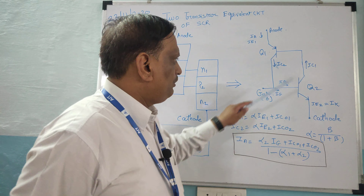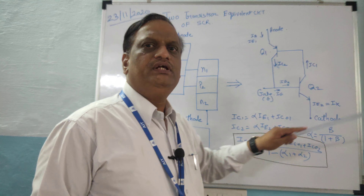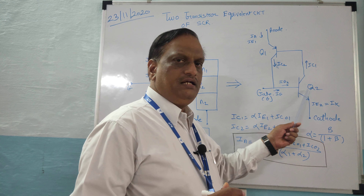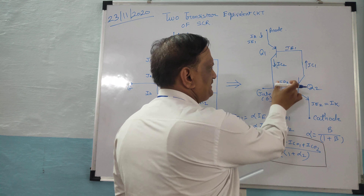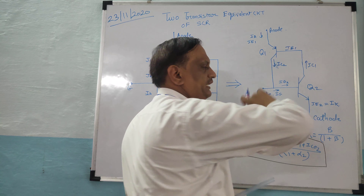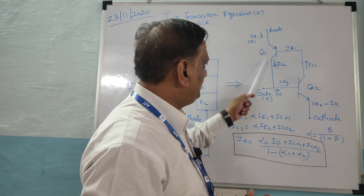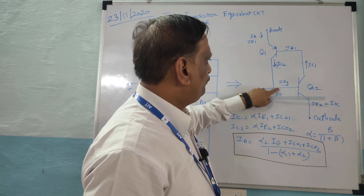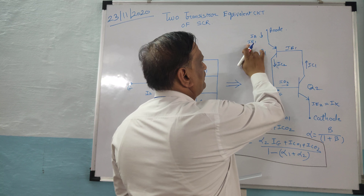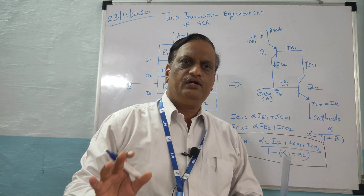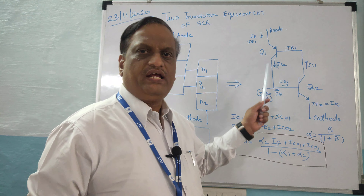Back-to-back connection means the output of the first transistor acts as the input of the second transistor. When the transistor starts conducting, the collector current of the first transistor acts as the base current IB1 for Q1, and IB2 is the base current for transistor Q2. IB2 is a combination of IG plus IC2. The emitter current of Q2 is the cathode current, and the emitter current of Q1 is the anode current. These are the current notations: anode current, cathode current, and gate current.